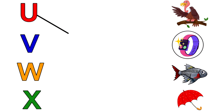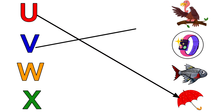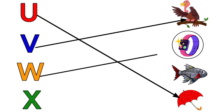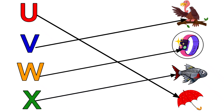U for Umbrella, V for Vulture, W for Watch, X for X-Ray Fish.